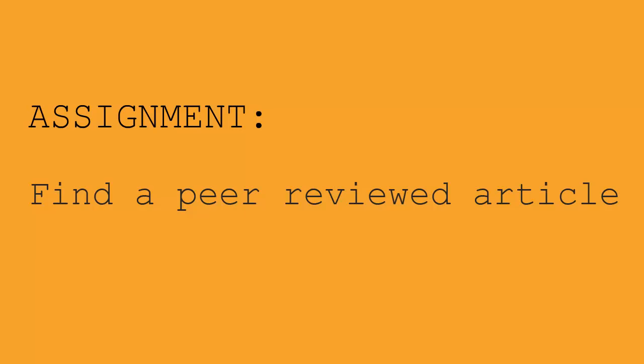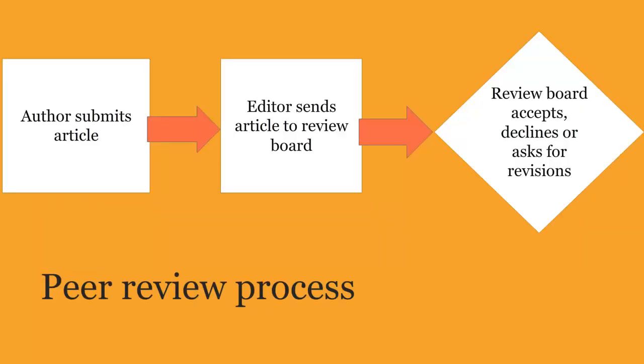First, what is a peer-reviewed article? A peer-reviewed article is one that has been reviewed by scholars who are subject specialists in the same field as the author. The group of peer reviewers can accept an article for publication, request revisions before publication, or reject an article. Because of this process, peer-reviewed articles and journals are considered